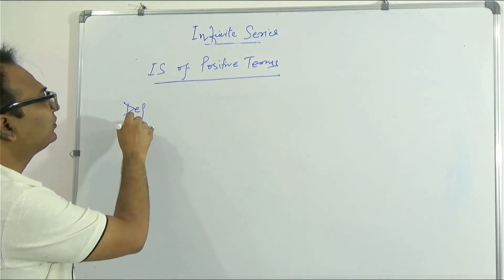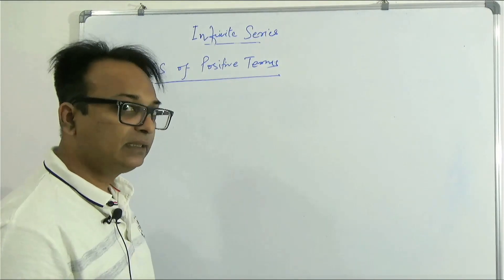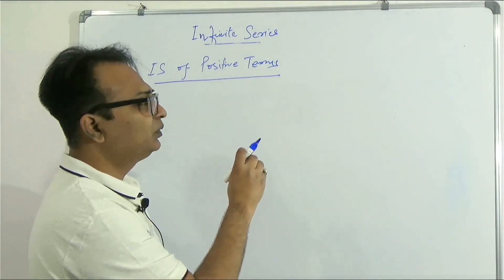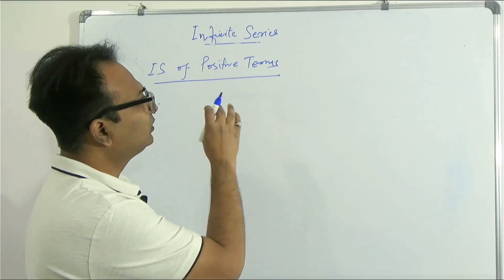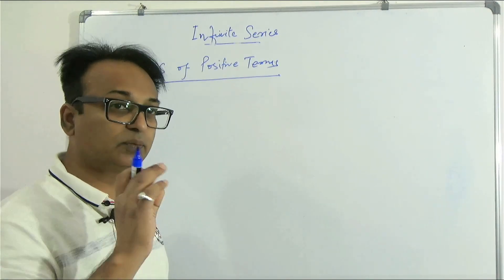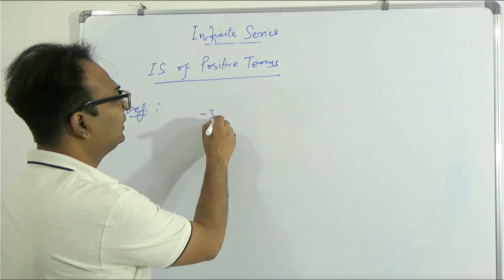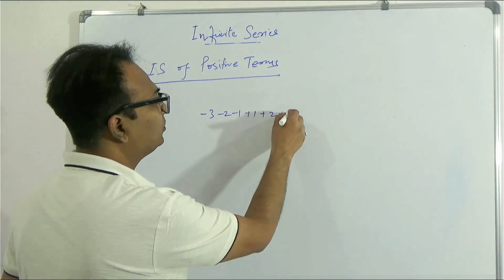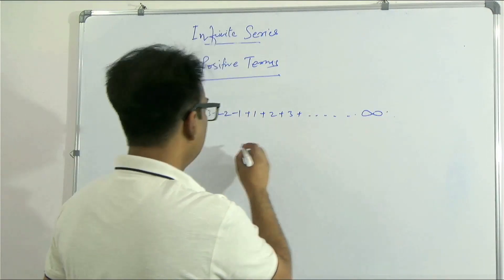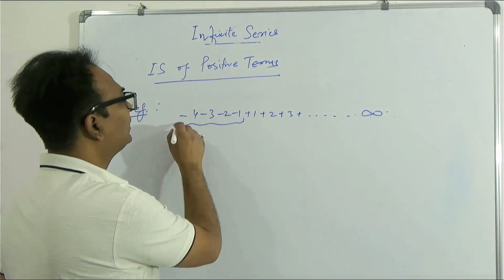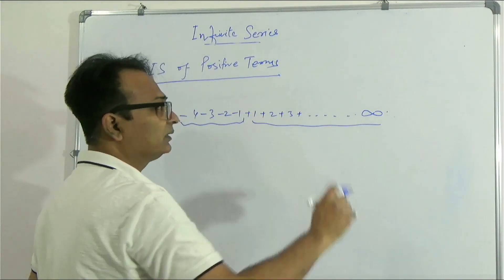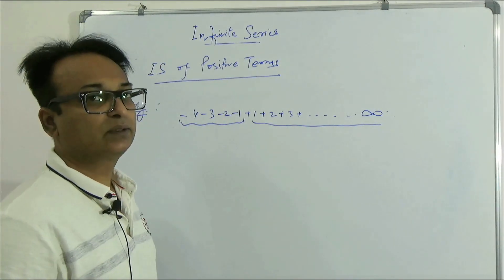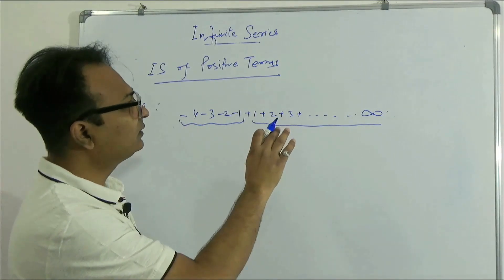The definition: if a series has positive terms after a few negative terms, the series is called an infinite series of positive terms. For example, minus 3, minus 2, minus 1, plus 1, plus 2, plus 3, plus 2, to infinity — after some negative terms the series becomes positive, so it is called an infinite series of positive terms.